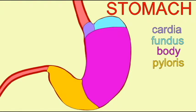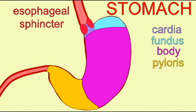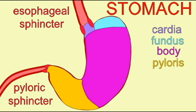There are two sphincters which limit flow. The esophageal sphincter has to open for food to enter the stomach, and the pyloric sphincter must open for materials to leave the stomach into the small intestine.